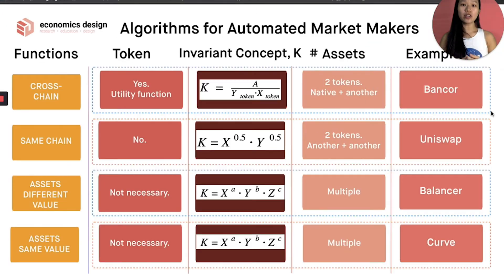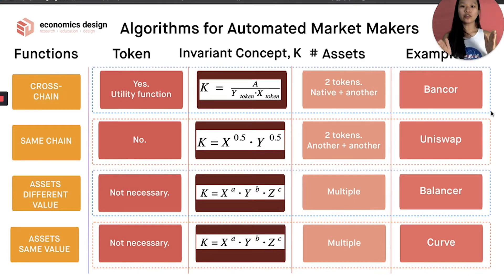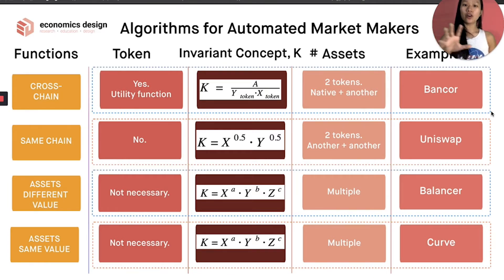To summarize what we've talked about today: we looked at four different functions of how AMMs can work in indexes. We also looked at the invariant concept K — K is something fixed, something constant. And although they are all AMMs working as indexes, the invariant concept is different across them.